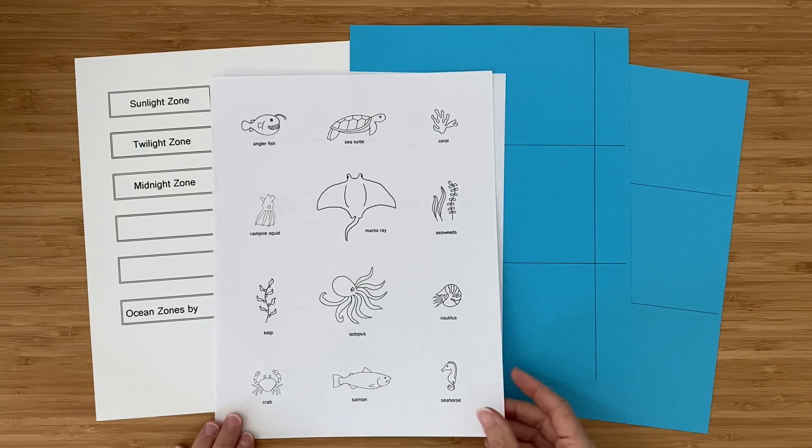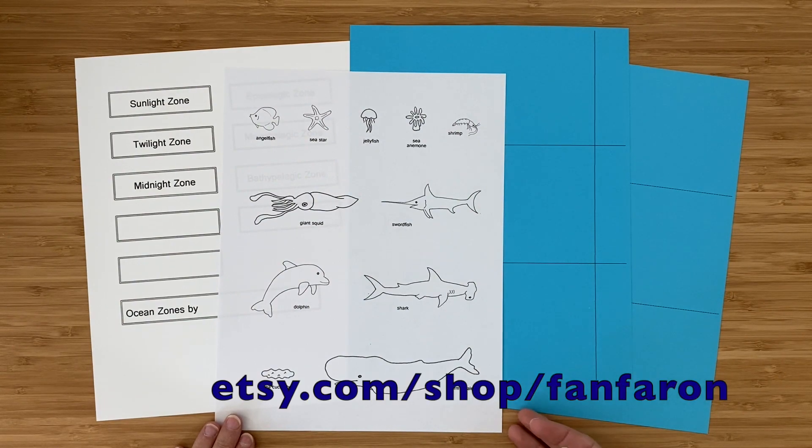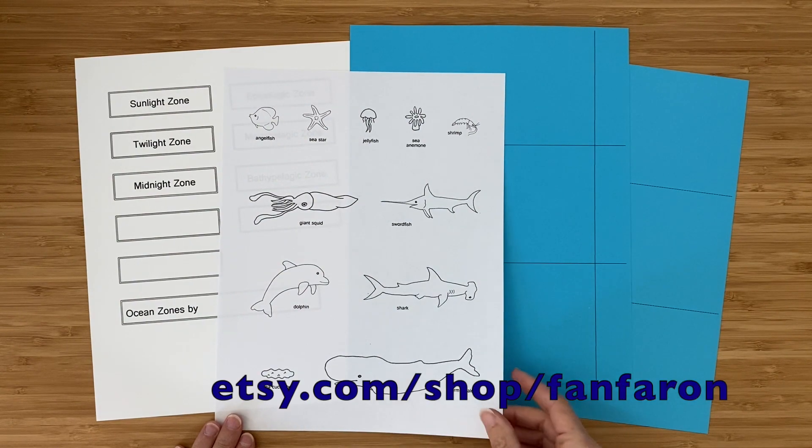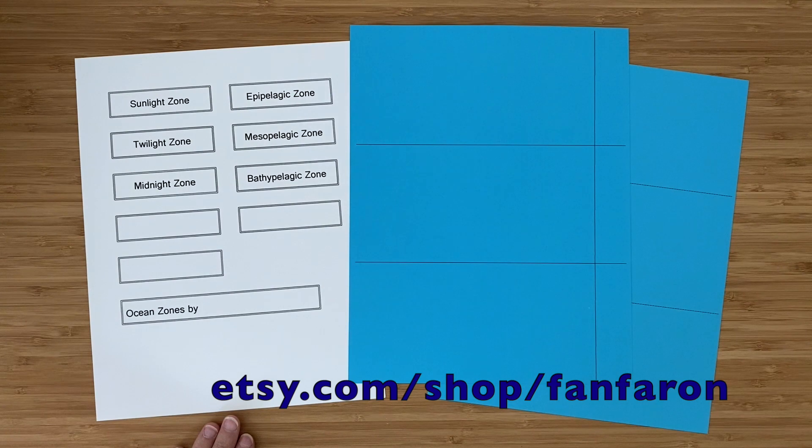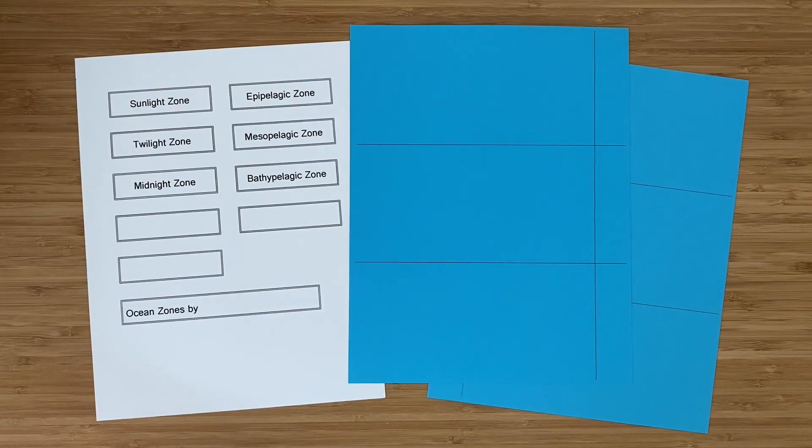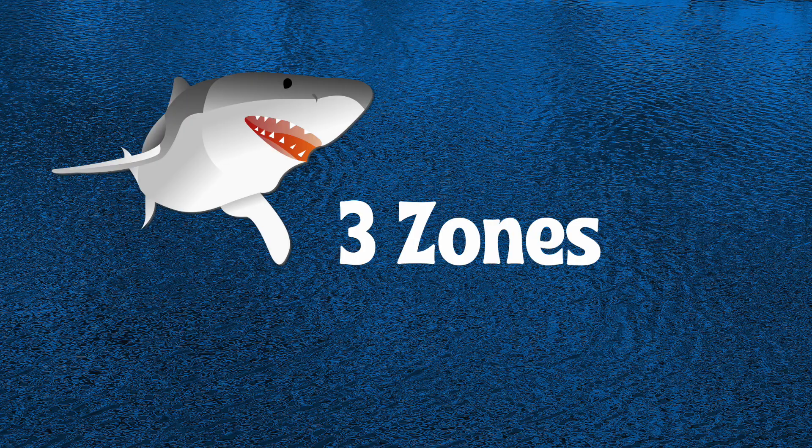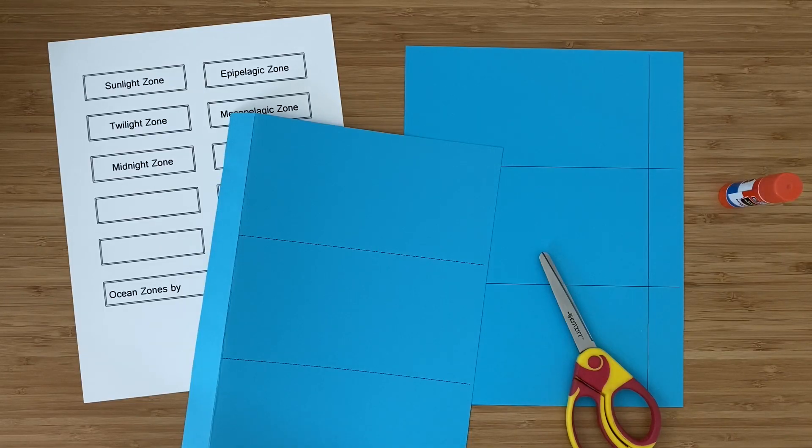You can purchase this printable from my Etsy shop at etsy.com/shop/fanfaron, and of course if you'd rather not purchase it you can freehand your own. I'm going to start by showing you how to do three ocean zones.